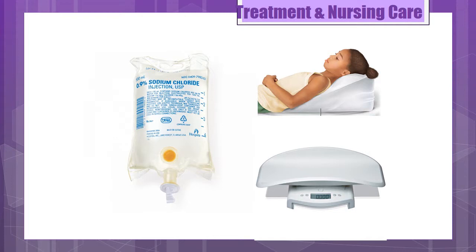Supplement oral feedings with IV hydration. Accurately measure intake and output — you want to make sure you weigh the diapers. Urine output should be a minimum of 1 to 2 mLs per kilogram per hour for infants and children. Make sure you're taking daily weight and doing frequent vital signs, including O2 saturation.